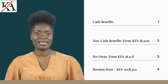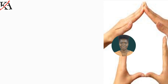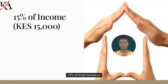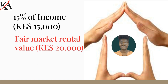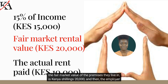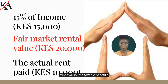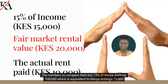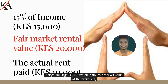Now let us look at how housing benefits are taxed under pay-as-you-earn. The housing benefit is taxed at the higher of: 15% of total income, fair market rental value, or the actual rent paid by the employer. For example, an employee's gross income is Kenya shillings 100,000, the fair market value of the premises is Kenya shillings 20,000, and the employer is paying Kenya shillings 10,000. The taxable benefit is Kenya shillings 20,000 — the highest of 15% of 100,000 (i.e., 15,000), the fair market value of 20,000, and the actual rent of 10,000.